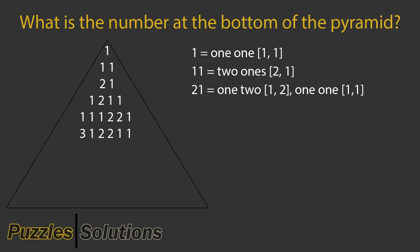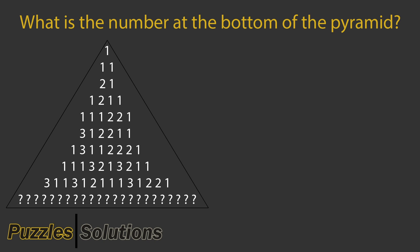This pattern keeps on going down the pyramid. To find the number at the bottom of the pyramid, we look at the second last number. To more easily see the different repeating segments, I will color code it like this.